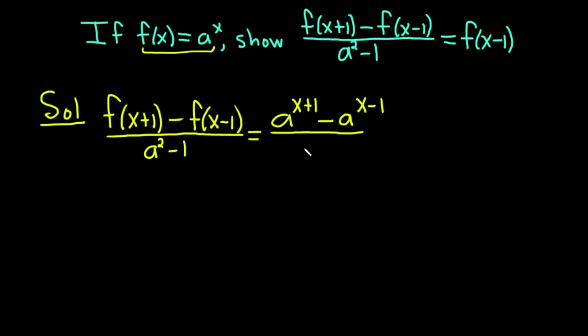On the bottom, we have a squared minus 1. So now we need to figure out how to proceed. So we need to get f of x minus 1, which is basically just a to the x minus 1. So somehow all of this is magically equal to a to the x minus 1. That means we need to get rid of a lot of stuff, in particular the stuff on the bottom.